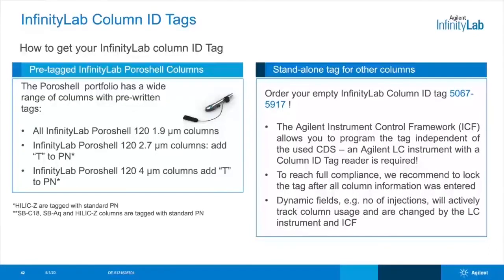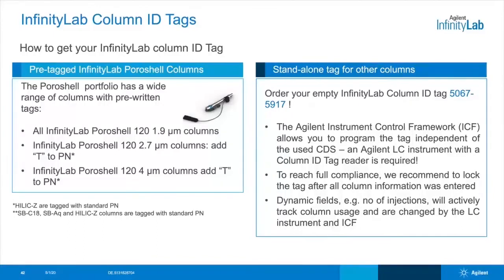If you're using another column, you can order a standalone tag. An empty InfinityLab column ID tag is part number 5067-5917. The Agilent Instrument Control Framework allows you to program the tag independent of the CDS you're using. An Agilent LC instrument with a column ID tag reader is required. To reach full compliance, we recommend to lock the tag after all column information was entered. Dynamic fields like number of injections will actively track column usage and are changed by the LC instrument and the ICF.